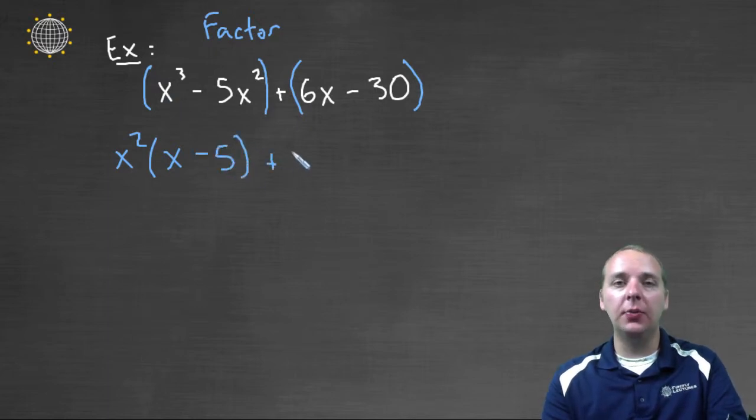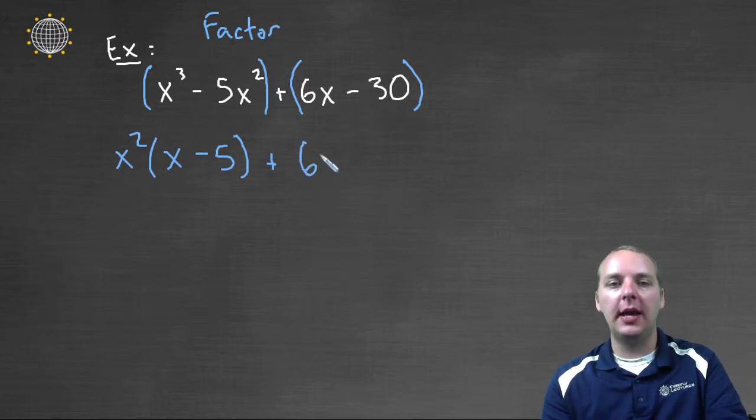Then in the second group, we'll have 6x minus 30 with a common factor of 6. We'll pull that out, and we'll have remaining an x minus 5.